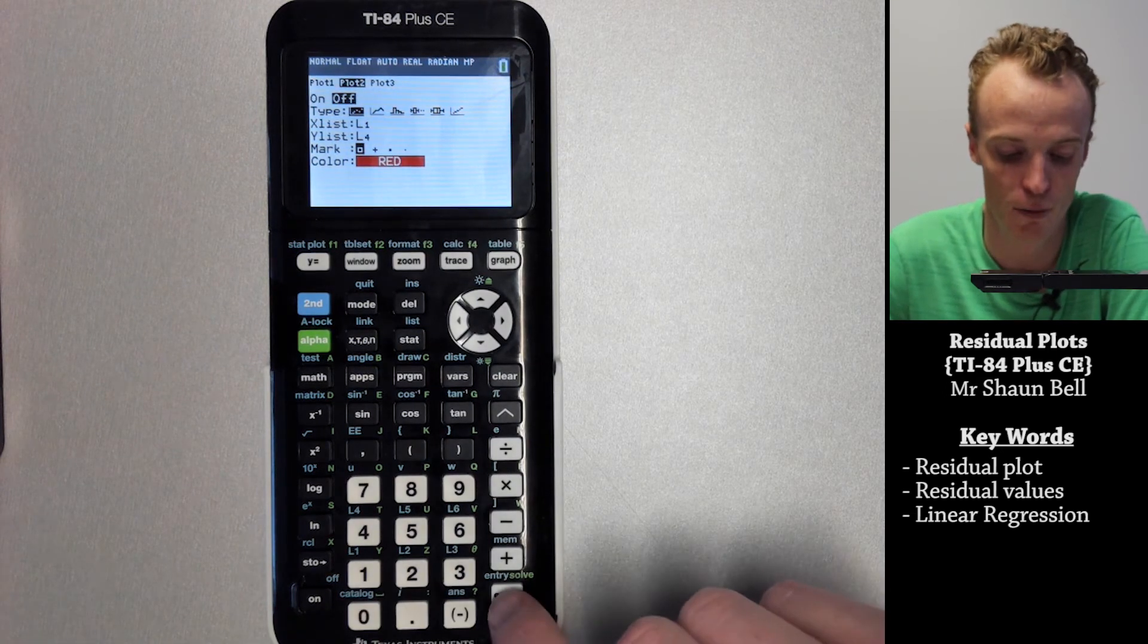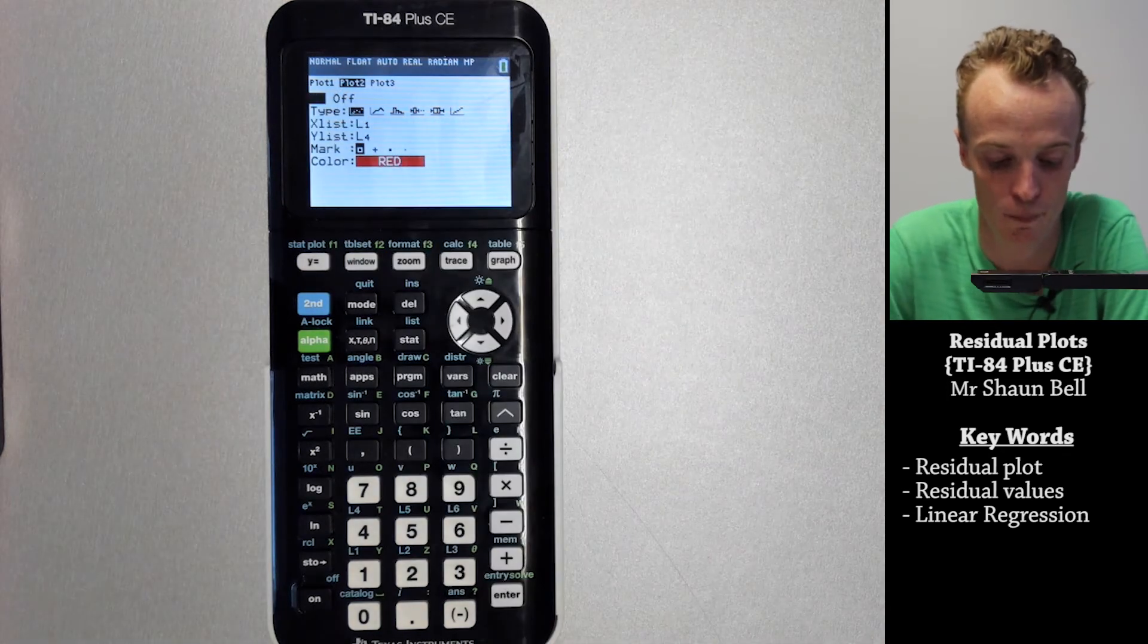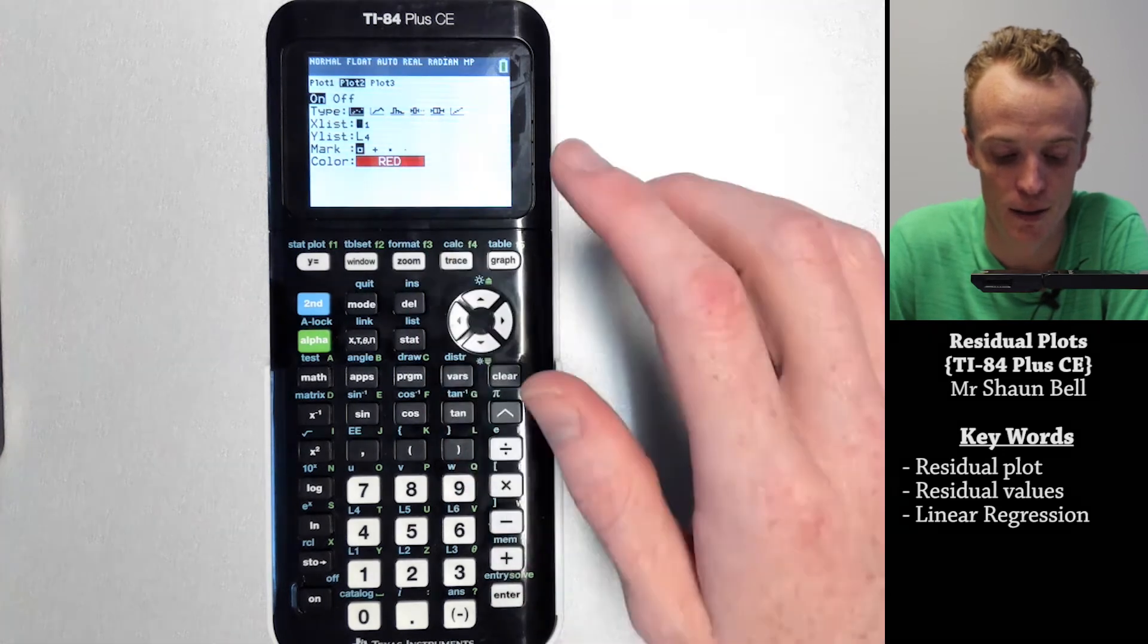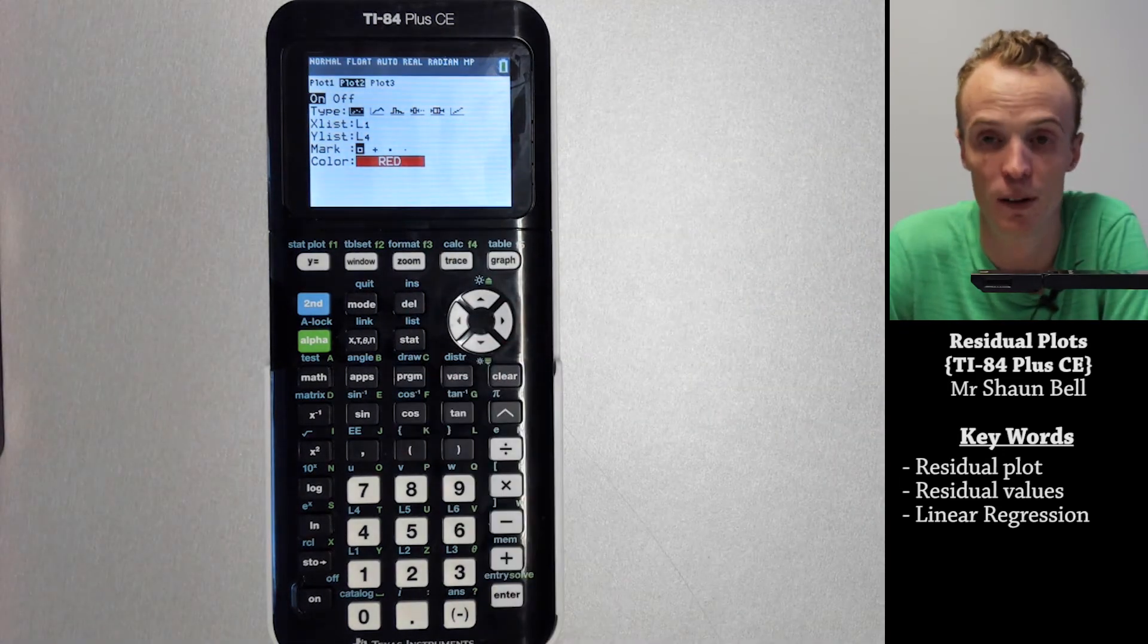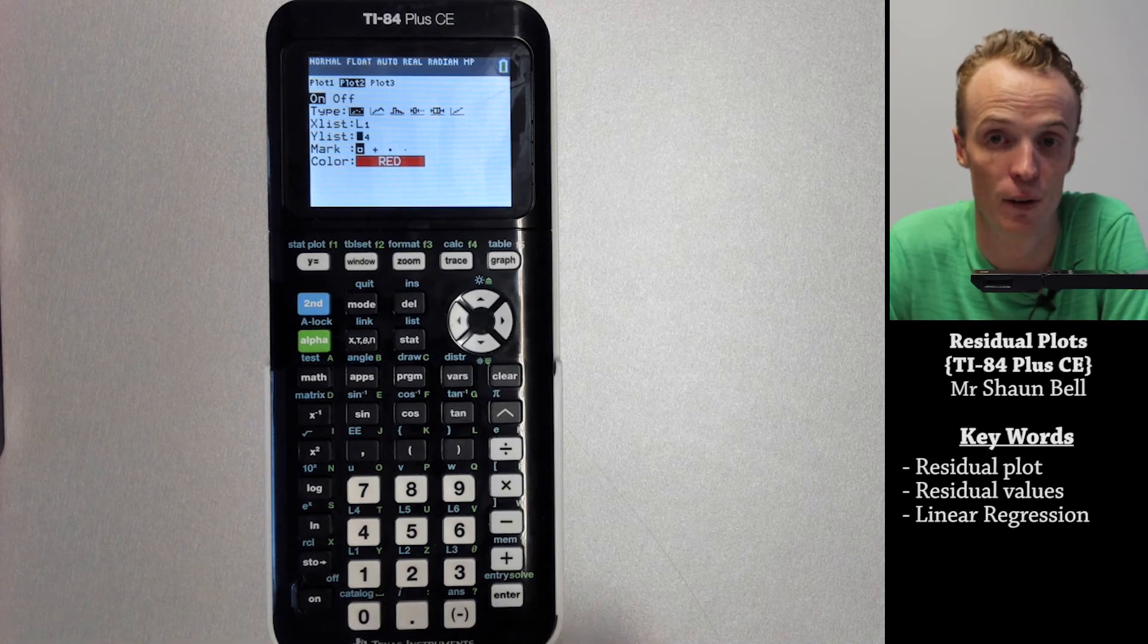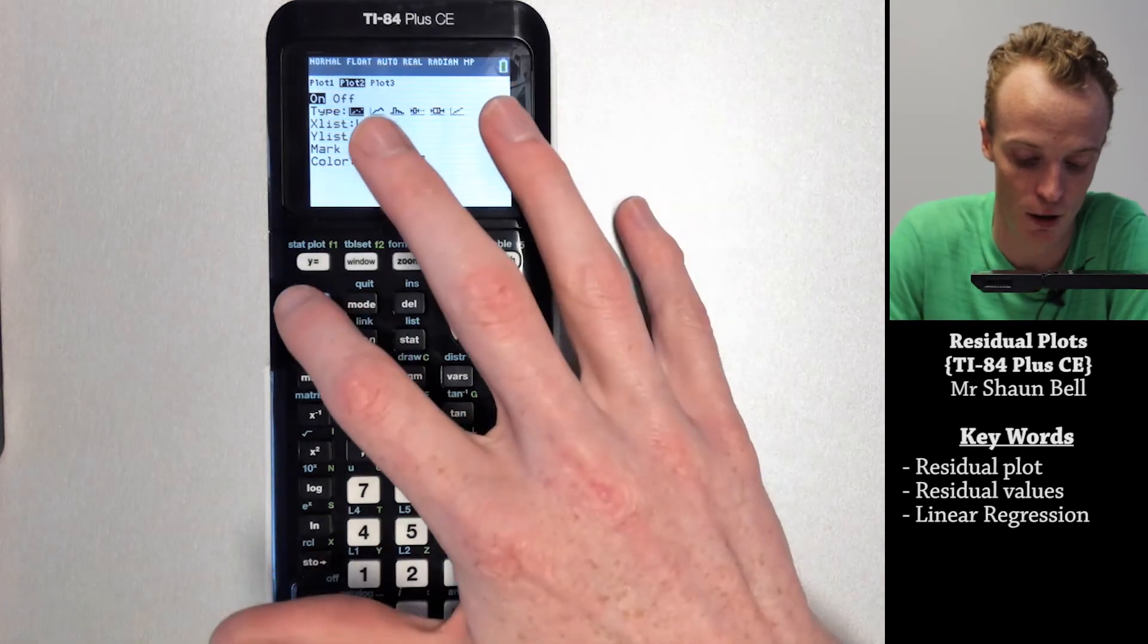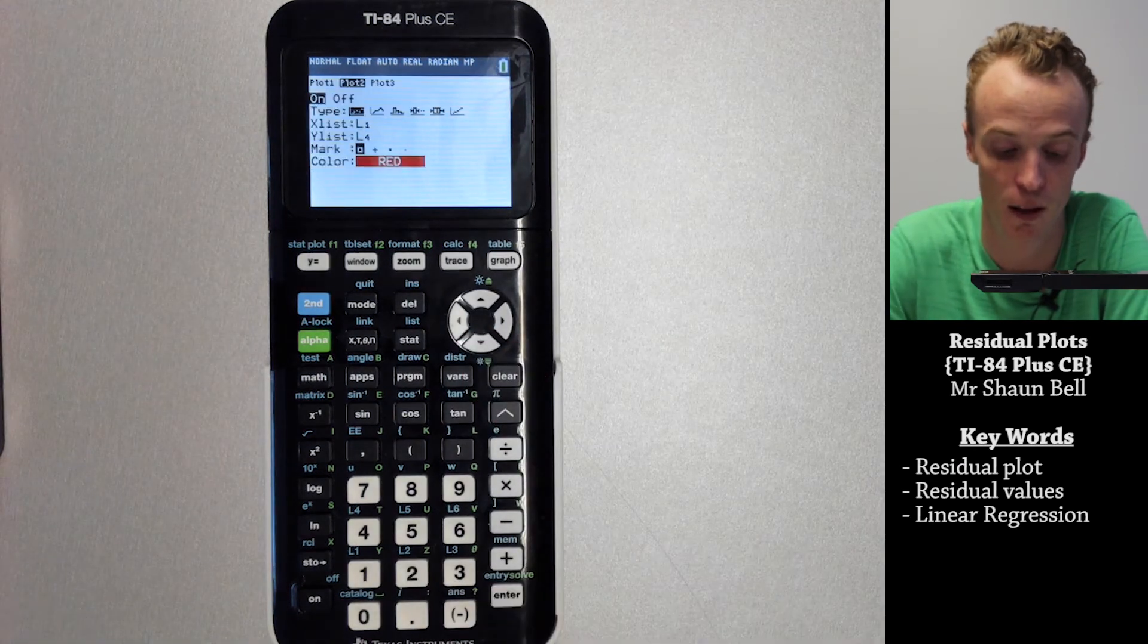I'm going to tell it that I'm going to graph a different plot using this plot, so I turn this one on. Still want a scatter plot graph. My x list is list one and I've already changed my y list to list four, but my residual values are my y values which are in list four. If you need to change that you go to second, list, and go to list four like that.